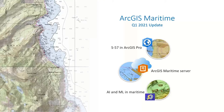Most of today's focus is going to be on migration of the S57 electronic navigational chart capabilities into ArcGIS Pro. That's because initially five years ago, we were expecting people to migrate to S100 as they migrated from ArcMap to Pro. But it seems clear that S57 is still going to be around for a long time before S100 is fully adopted. So as a result, we've spent the past two ArcGIS Pro releases migrating our S57 support from ArcMap into ArcGIS Pro.